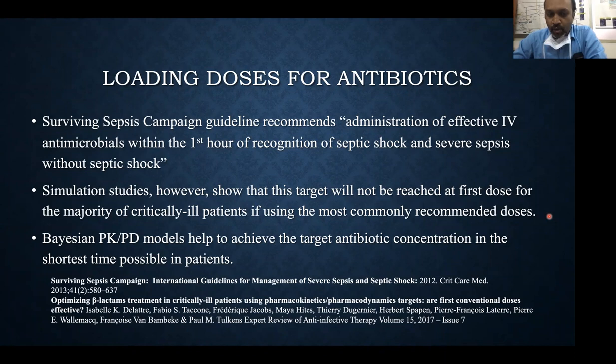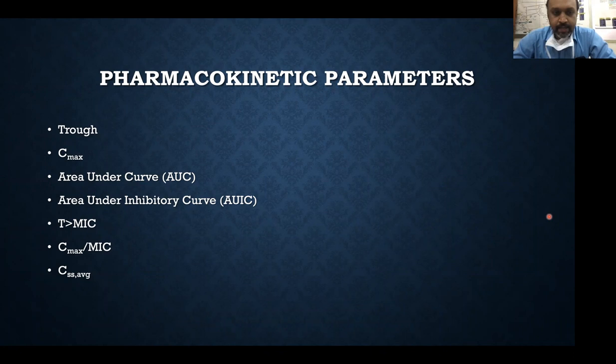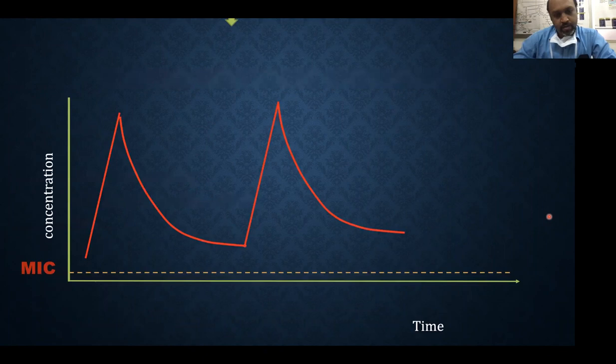Bayesian PK/PD models help to achieve the target antibiotic concentration in the shortest time possible. Before explaining those, these are the pharmacokinetic parameters we look at: trough, Cmax, AUC (area under the curve), AUIC (area under the inhibitory curve), T>MIC, Cmax above MIC, and steady-state average concentration.